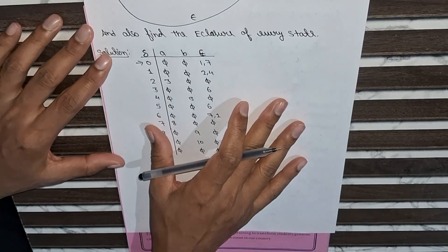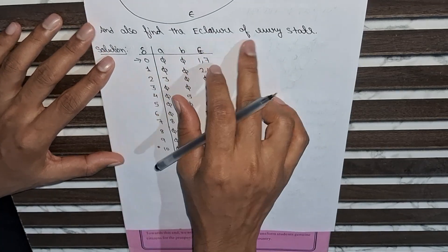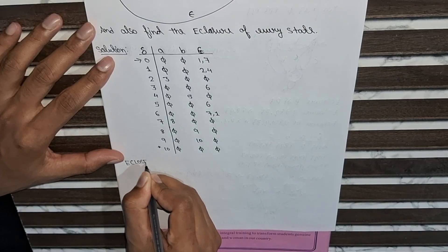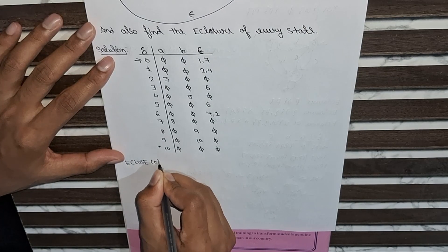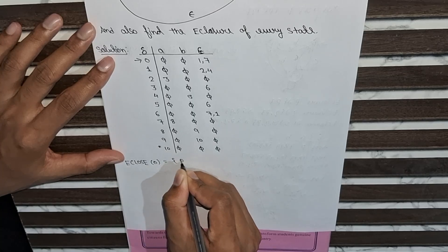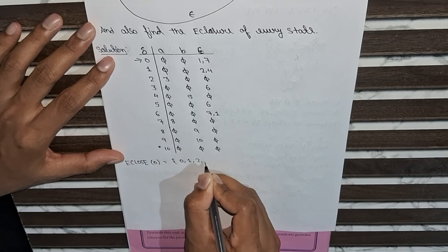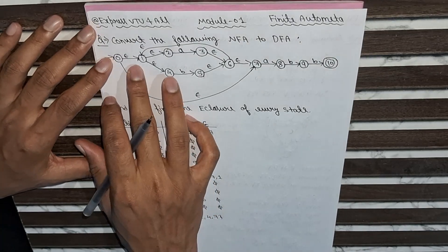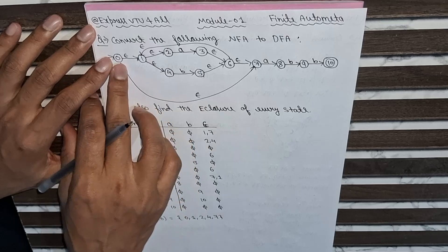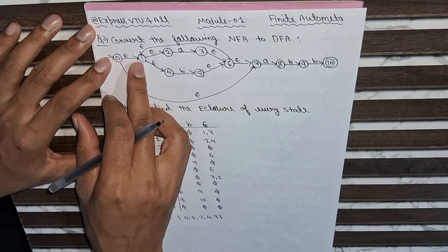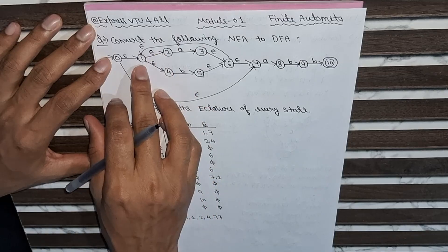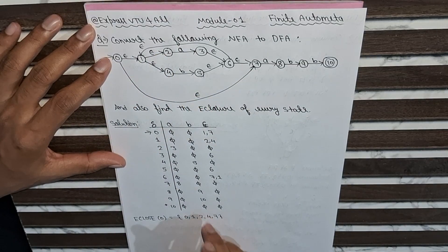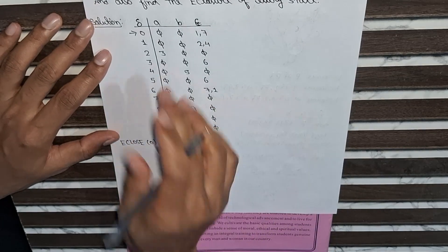Now we have to find the e-closure of every state. First we will find the e-closure of zero. E-closure of zero will be zero, one, two, four, seven. From the NFA diagram, at state zero with epsilon I can access one, I can access two, I can access four, I can access seven — so zero, one, two, four, seven.